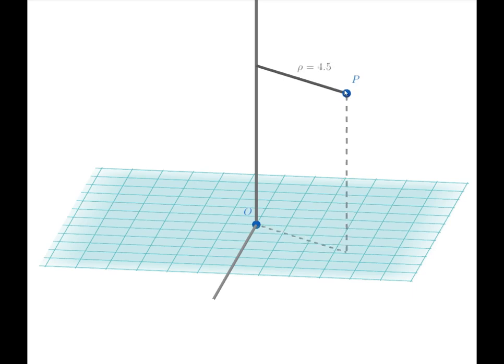Now the segment that is dropped from point P back to the polar axis is at right angles. And this forms one of our dimensions.